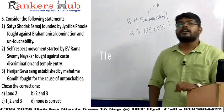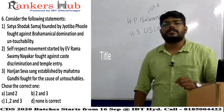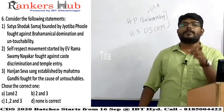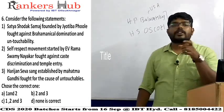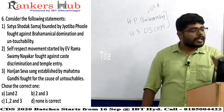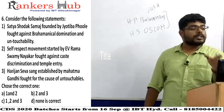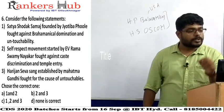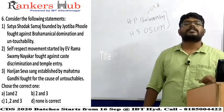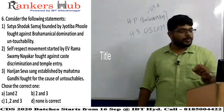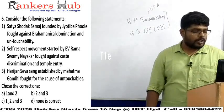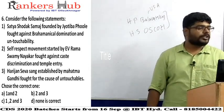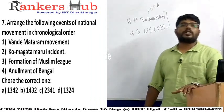Statement three: Harijan Seva Sangh established by Mahatma Gandhi fought for the cause of untouchables. This is correct because Gandhi was the first person to call Dalits 'Harijan.' He fought with Ambedkar in the Poona Pact, established the Harijan Seva Sangh, and fought for untouchables. All three statements are correct, so the correct answer is C, all three.